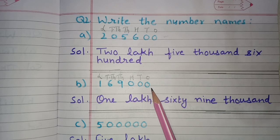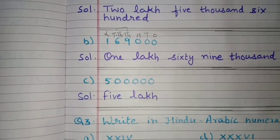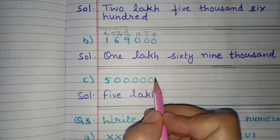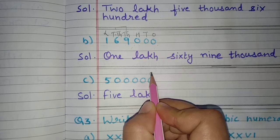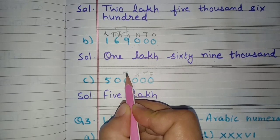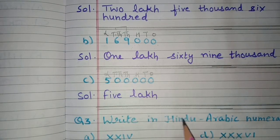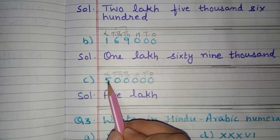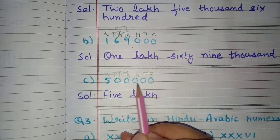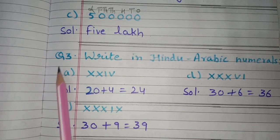Next is part C. We mention the places: ones, tens, hundreds, thousands, ten thousands, and lakhs. Reading it: five lakh, because at all lower places we have nothing. So five lakh is the number name.